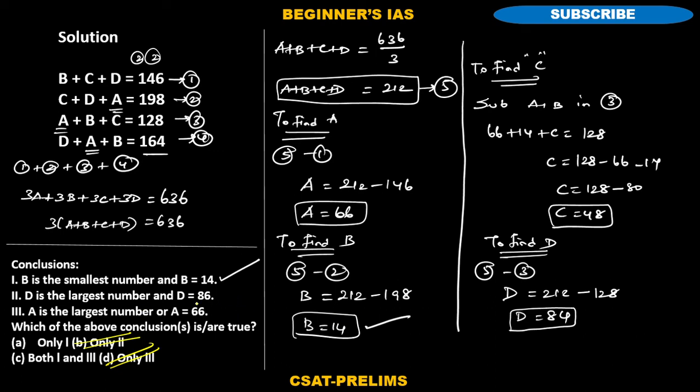Now you have to check with three alone. Here you just go with the statement, that is conclusion number two: D is the largest number and D is equal to 86. But the D is equal to 84, therefore this statement is wrong. A is the largest number or A is equal to 66. Be careful that this statement will make you - this 'or' will make this statement correct, since A is equal to 66. Therefore the answer for this question would be C: 1 and 3 is the answer, that is both 1 and 3 is the answer for this question.